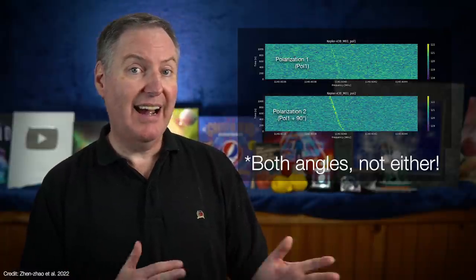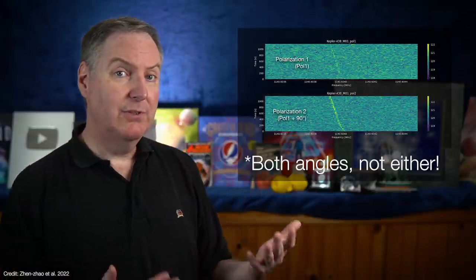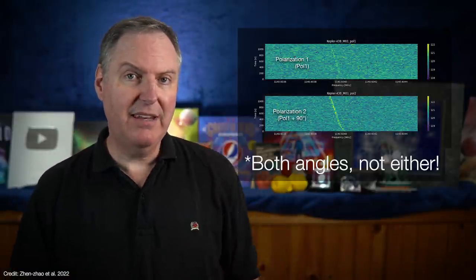However, the Kepler 438 signal does in fact appear to be fairly strong in one of those two polarizations. If the signal appeared to have roughly the same intensity at either angle, well that would certainly have strengthened the signal's candidacy. But the fact that it lines up with one of FAST's own polarization angles suggests that it's probably some kind of RFI that's either associated with one of FAST's instruments or some other electronics that are nearby.